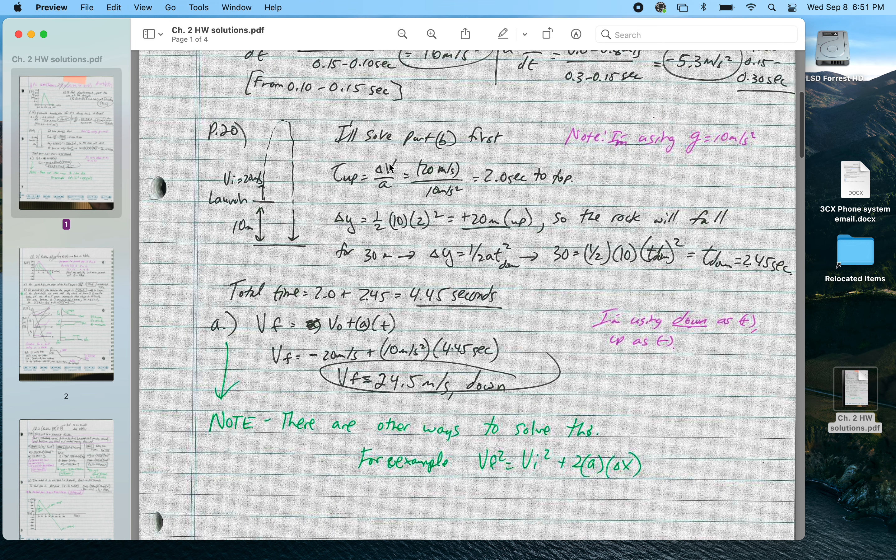For problem 20, we had something thrown up, maximum height goes down into a hole 10 meters below. We're asked to find the total time that this thing's in the air and then find the final velocity right before it hits that bottom of the hole.